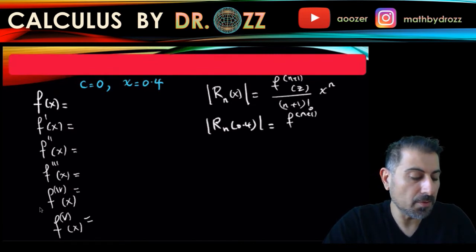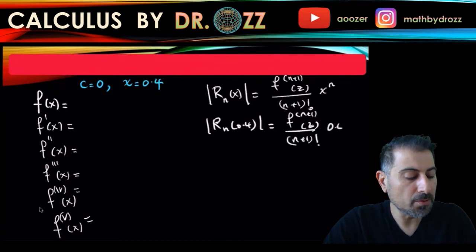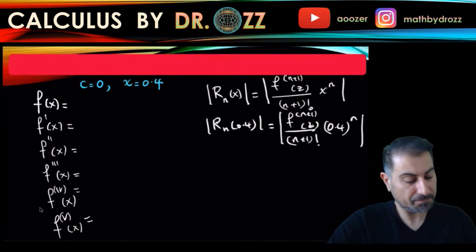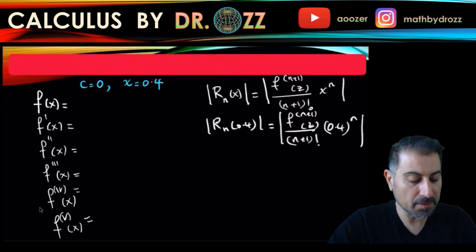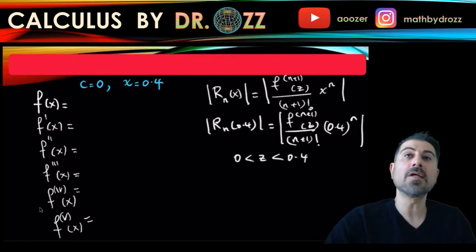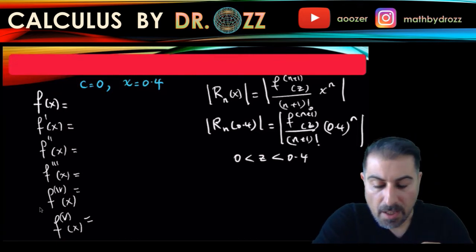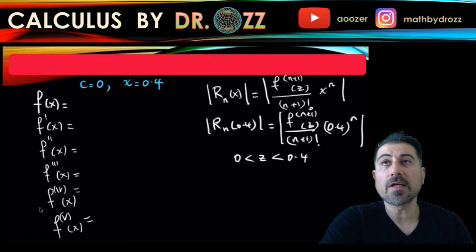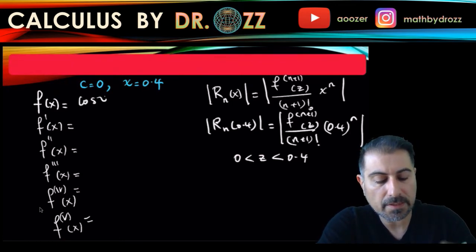So again, the question is what is n? What could be the minimum n? What is the minimum number of terms you keep in P n so that the error is going to be less than 10 to the minus 3? So for that reason, x is going to be 0.4, and then I'm going to look at r n at 0.4 eventually. F n plus 1, z n plus 1 factorial, 0.4 to the n, obviously an absolute value.